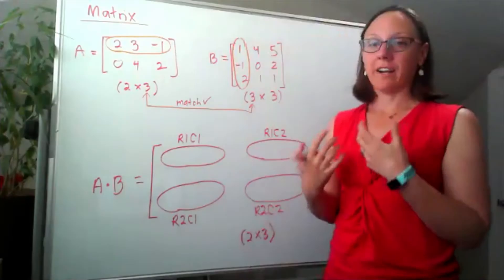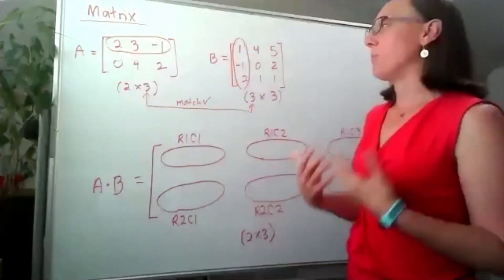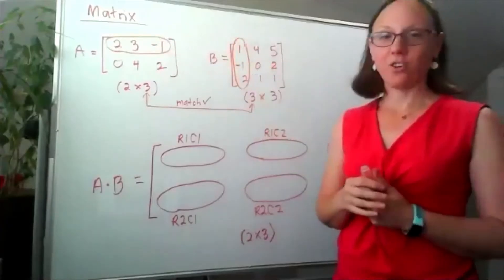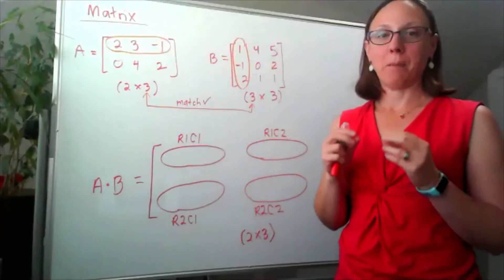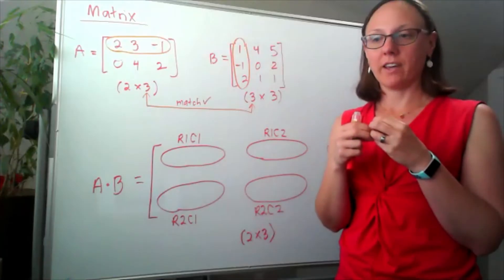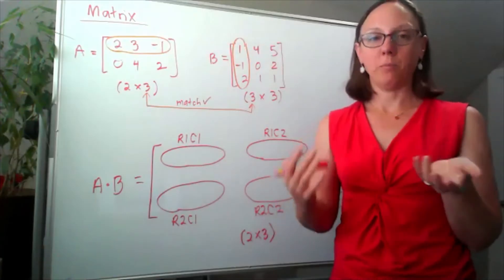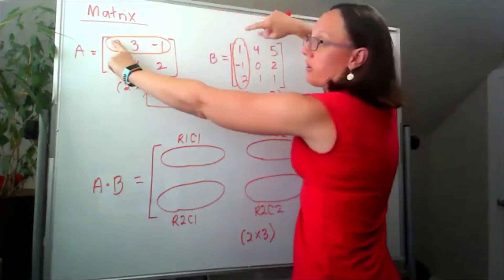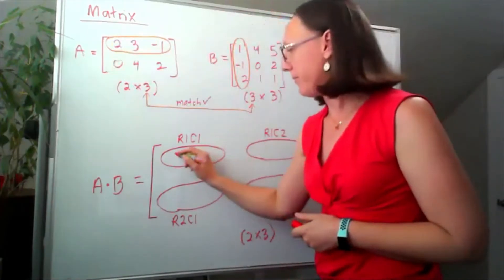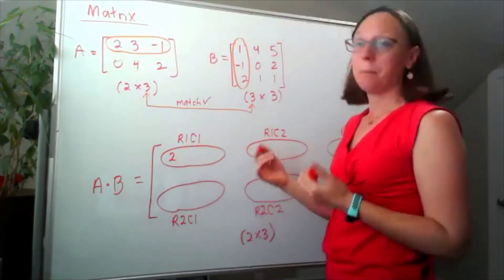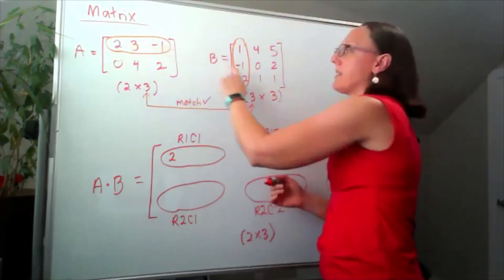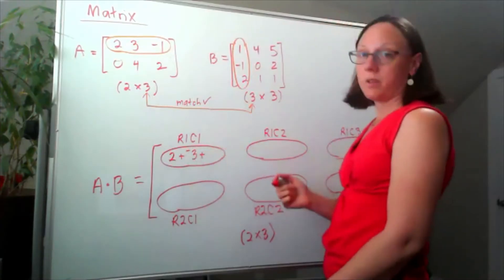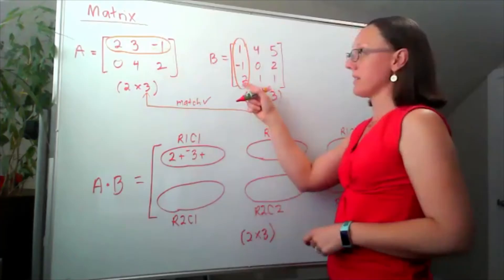Well, what goes in here is actually the dot product. So I'm taking the dot product of this row and this column, which means I'm going to match up the entries, multiply those together, and then add between our entries. So that's going to look like 2 times 1 plus 3 times negative 1, plus negative 1 times 2.